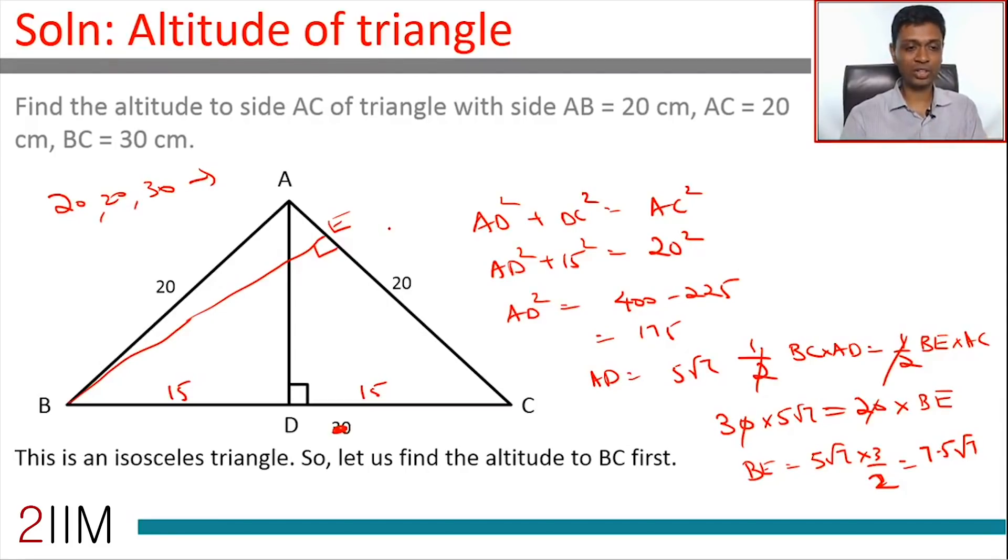Technically speaking, BE would not lie on AC. It would lie on CA extended. It's important to know that, but in this question it doesn't really matter. Even if we have drawn this diagram, we'll still get the answer fine, 7.5√7.